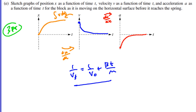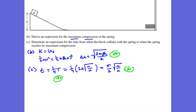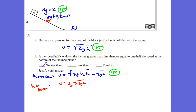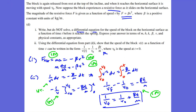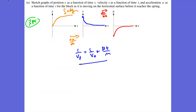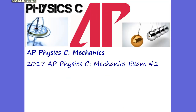A1 was worth two points, A2 was worth one more point, B was worth one point, C was worth two points, D was worth six points total, and three points for E. And that was the 2017 AP Physics Calculus Mechanics Exam number two. Have a great day. Bye.